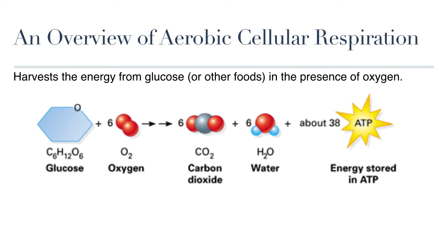This number of 38 ATP is kind of a best-case scenario of optimal ATP yield. Cells will rarely manage to produce 38 ATP from a single glucose molecule for a variety of reasons — you can read about them in the lesson notes provided. Also, the process of cellular respiration results in a lot of energy being lost as heat, which is actually a good thing for us because this heat is what keeps us warm.